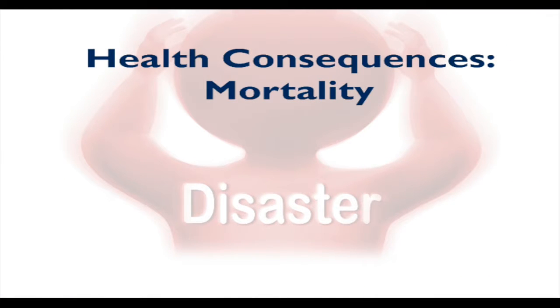Disaster-related mortality is a major consequence we must focus on. When you lose a family member — a parent, sibling, child, or friend — we can't get that back. We have to think in terms of prevention. We can't rebuild the human body like we rebuild a road or building. Working together ahead of time to learn about disasters and prevent ourselves from being victims is essential, because a little forethought can go a long way.